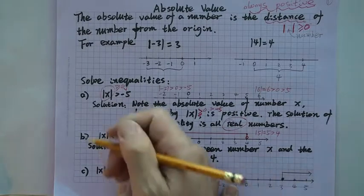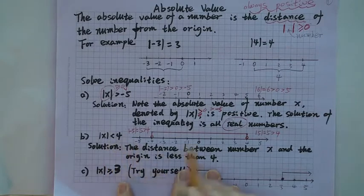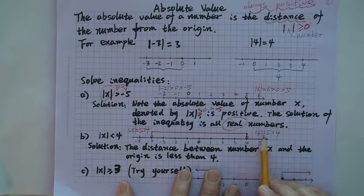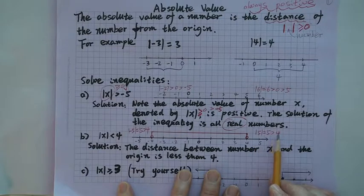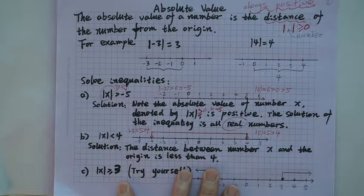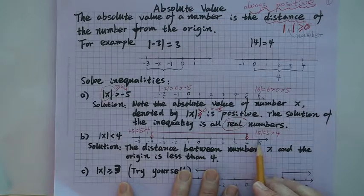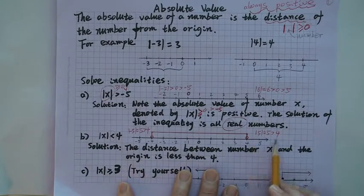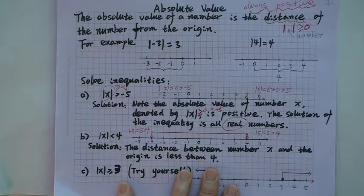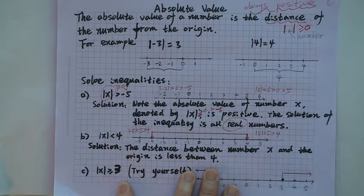You can plug in two different numbers. If you plug in positive 5, the absolute value is still 5, which is greater than 4. We want less than 4. So if you plug in a number greater than 4, it's not going to work on that side. If you plug in a number less than negative 4 on the left, it's also not going to work. So all the numbers in between are going to work.